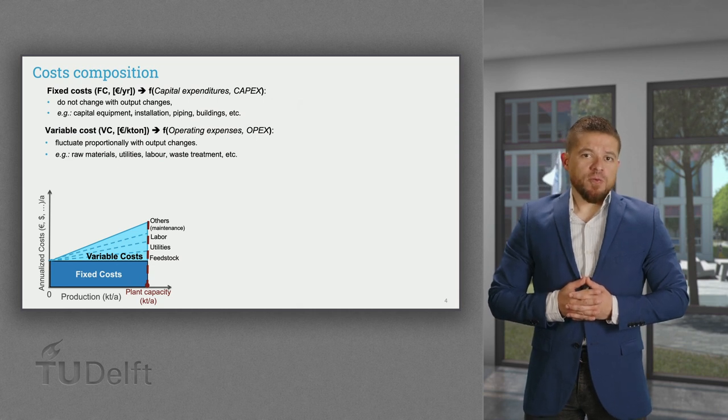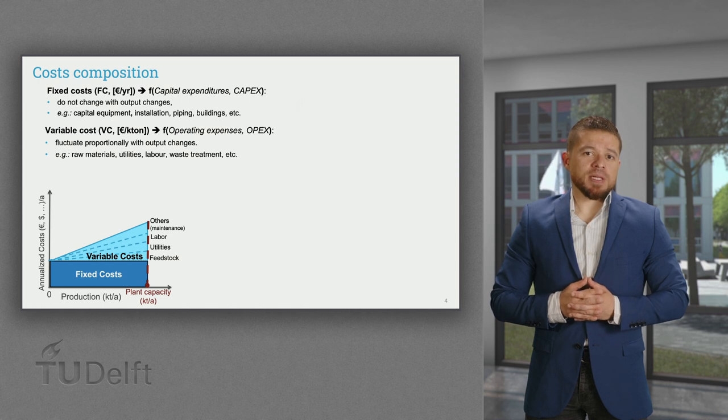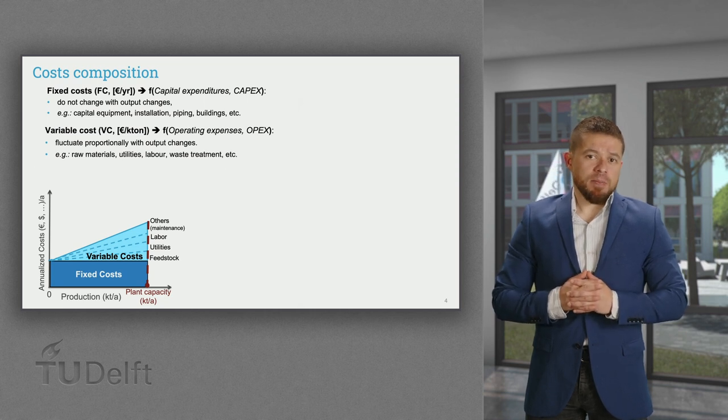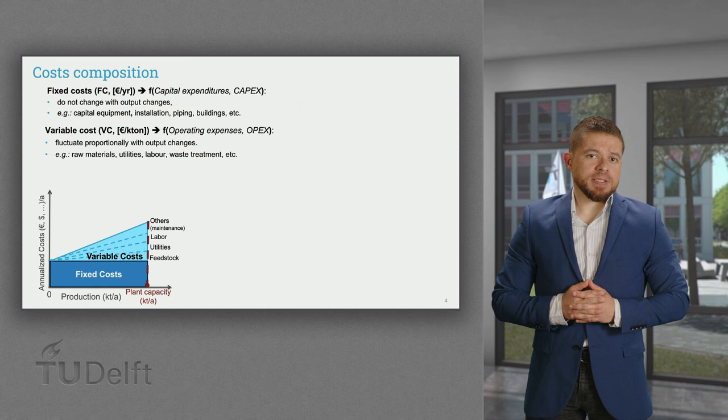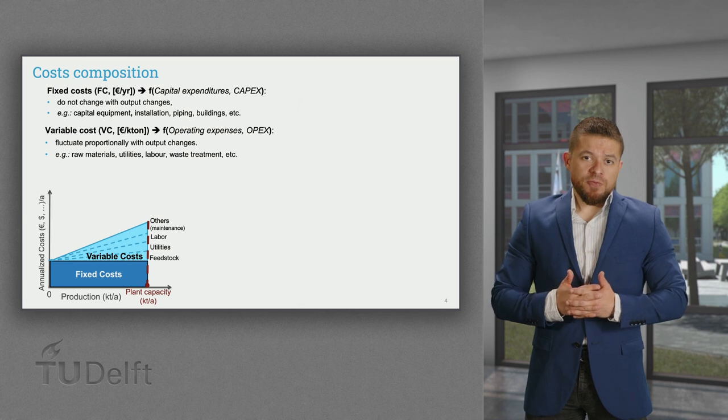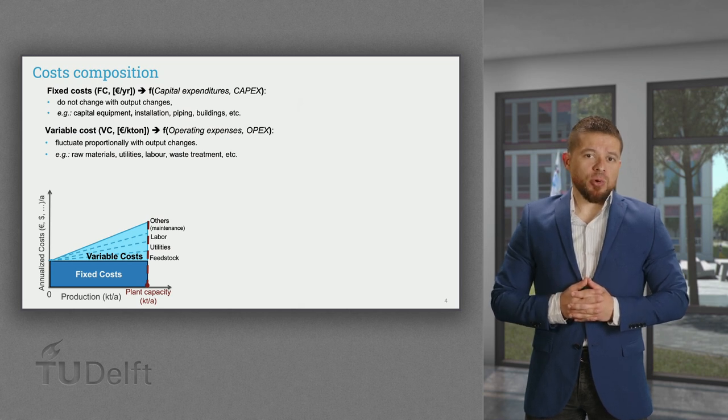In this way, for an industrial bioprocess facility that is built at a given plant capacity, the fixed costs do not change with the production scale, regardless of the actual outcome of the products, since the investments have already been made. Be aware of the differences between the plant capacity and the production scale. The former refers to the size at which the facility was built, and the latter refers to the actual outcome of products.